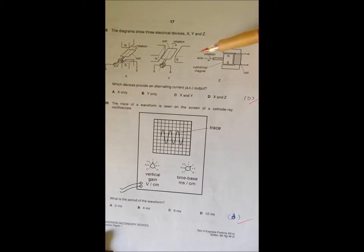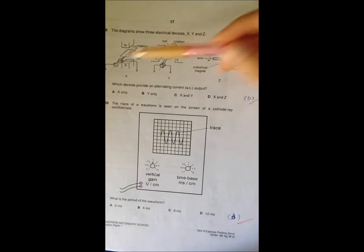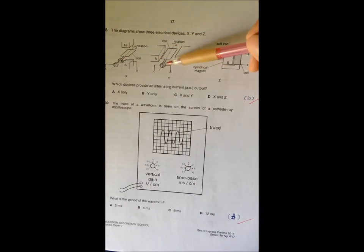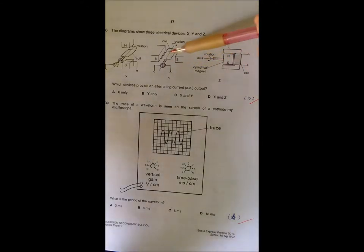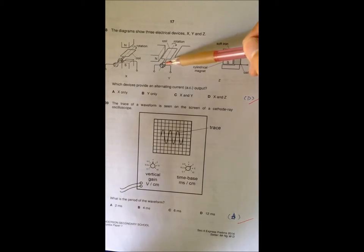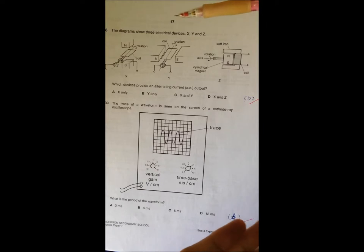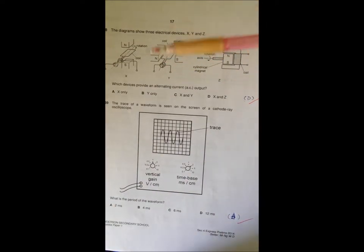Question 38 is interesting. Your target is to get an alternating output. So what happens is that if you look at Y, there's a split ring here. So just think of the function of the split ring. Whenever there's one rotation, this split ring is going to cut off. How to explain this...